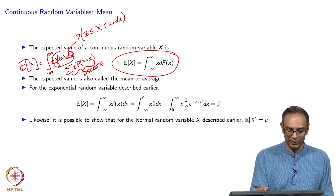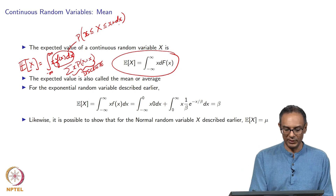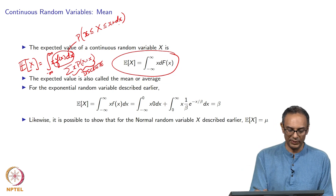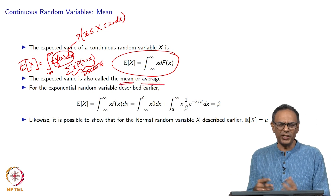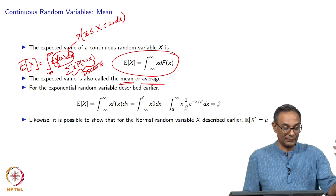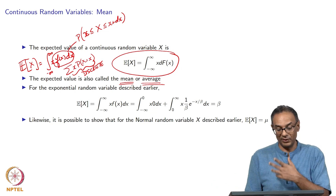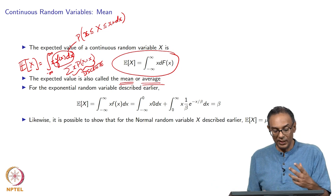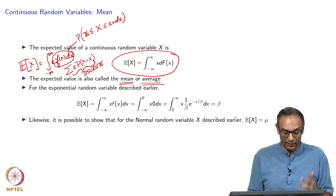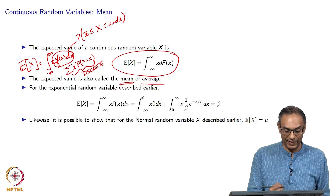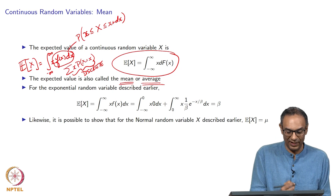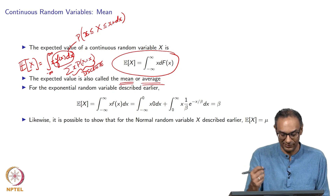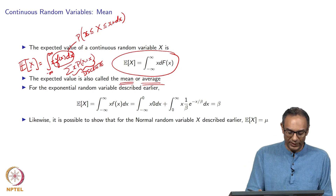We will use this notation and compute it. The expected value is also called the mean or average, and we will interchangeably use these three terms. We have to be careful: the probability that a continuous random variable takes exactly one value is 0, so it is not like a specific value that we expect to see.